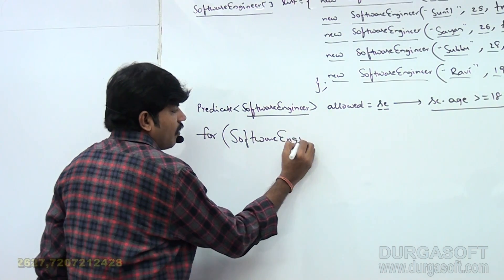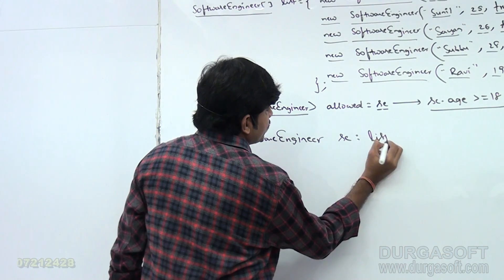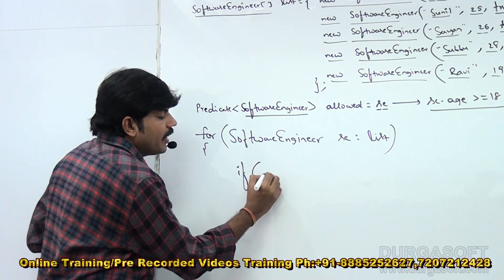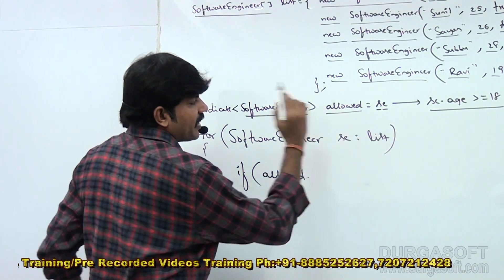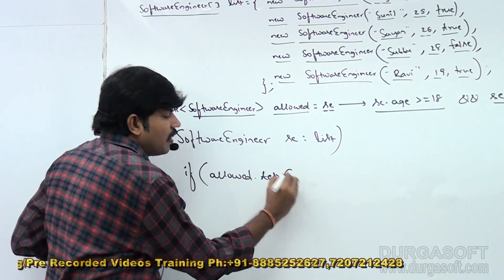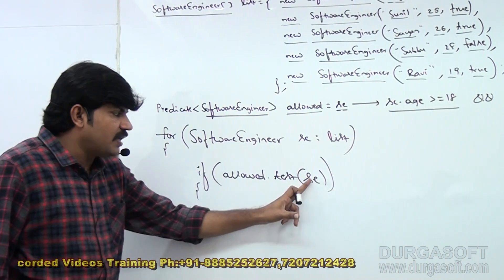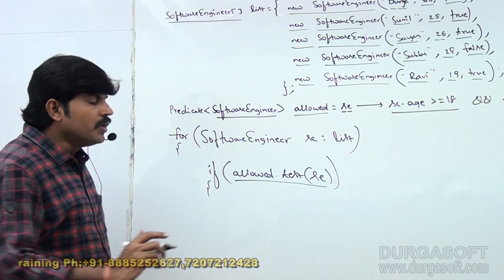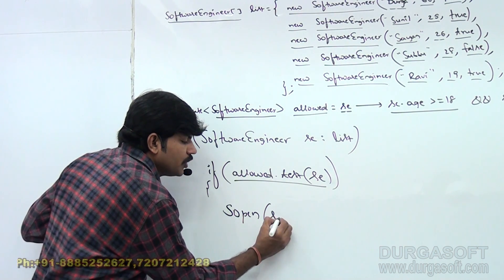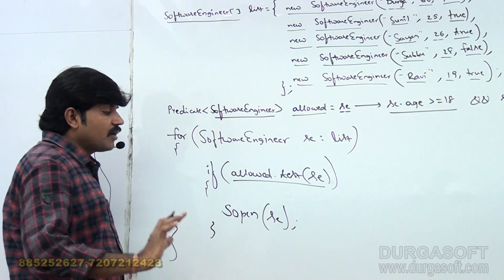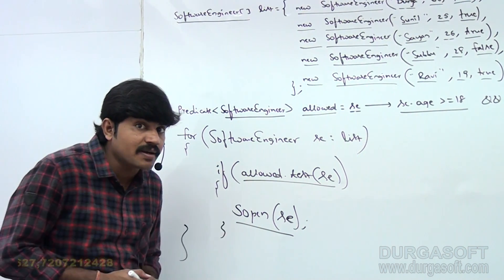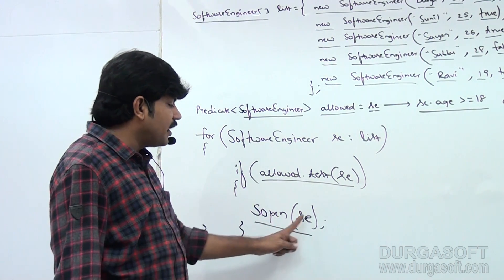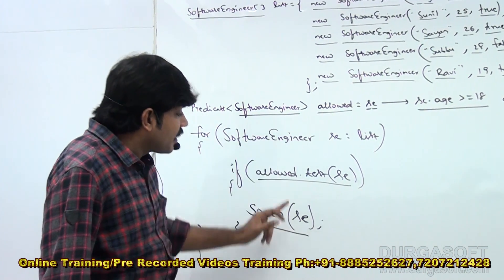Now, for each software engineer object 'se' in the list: if allowed.test(se) returns true, then this software engineer is allowed into the pub — just print that. Since I overrode toString() to return name, whichever persons are allowed, their names will be printed automatically.